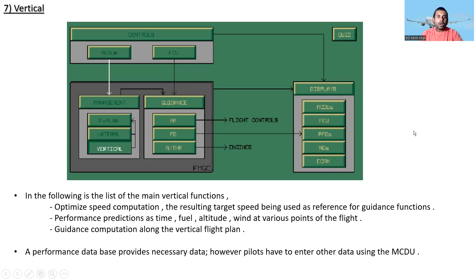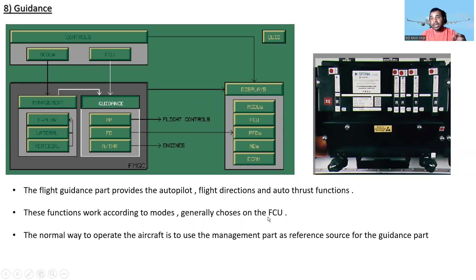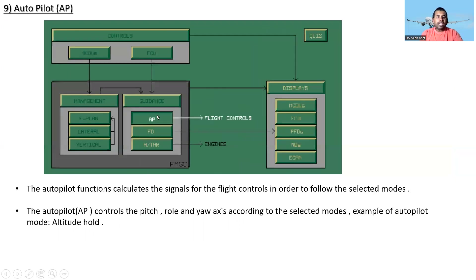Now let's go to the guidance section. The flight guidance part provides the autopilot, flight director, and auto thrust functions. These functions work according to modes, generally chosen on the Flight Control Unit. The normal way to operate the aircraft is to use the management part as a reference source for the guidance part.